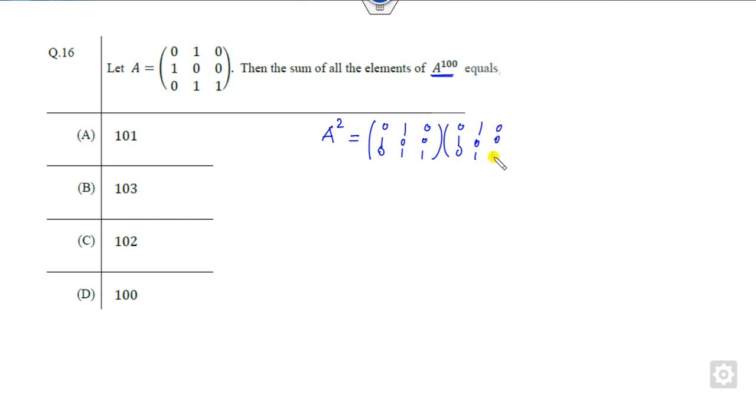So look at that, what is the answer of this problem. When you multiply them it will be 1 0 0, then it will be 0 1 0, 1 1 1.